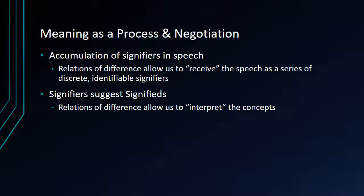So what does this tell us about meaning in speech and writing and how it's formed? It tells us that meaning is always a process and a negotiation. We have an accumulation of signifiers in speech, and each new word that someone says — or each new word you read — changes the meaning of what comes before, adds to it. The accumulation of word after word allows us to receive the speech as a series of discrete, identifiable signifiers that, when taken together, have some larger meaning. The signifiers suggest their concepts, their signifieds, and the relations of difference between those signifieds and the accumulation of one after the other allows us to interpret the meaning being expressed.